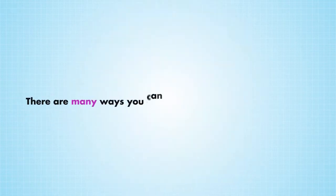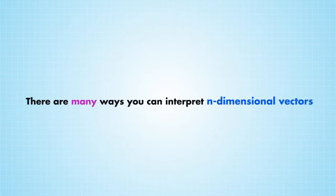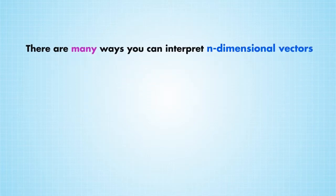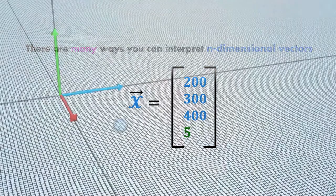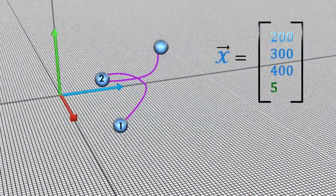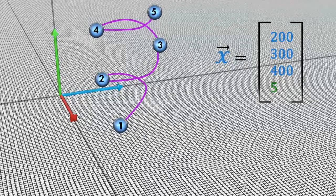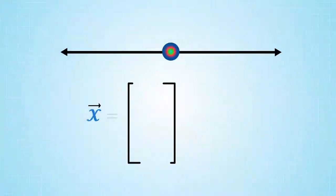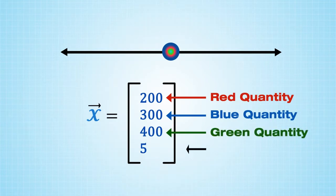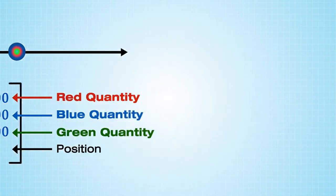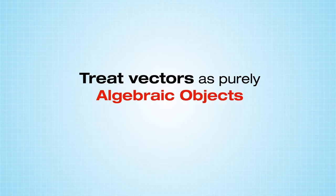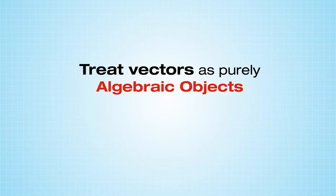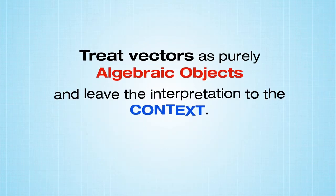Regardless, there are many ways you can interpret n-dimensional vectors. For example, x equals (200, 300, 400, 5) can represent a particle at position (200, 300, 400) at time 5. But we can also interpret the same vector as a coloured point on the number line. Therefore, treat vectors as purely algebraic objects, and leave the interpretation to the context.